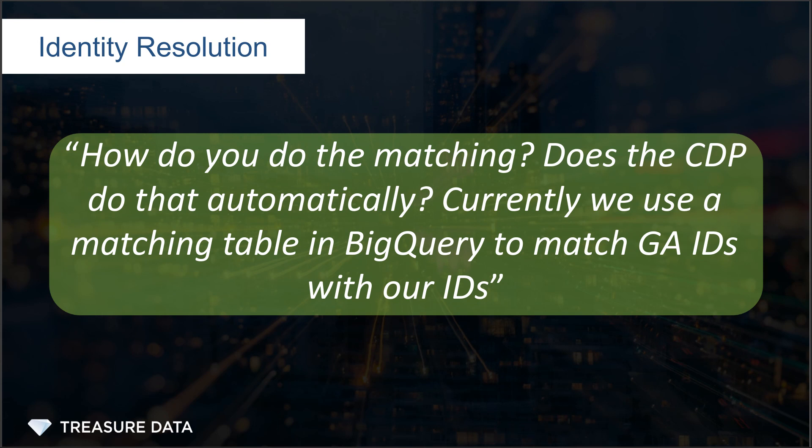How do you do the matching? Does the CDP do that automatically? Currently, we use a matching table in BigQuery to match GA IDs with our IDs. For people on the call that don't know, BigQuery is Google BigQuery — that's Google's fully managed cloud data warehouse — and GA is Google Analytics.